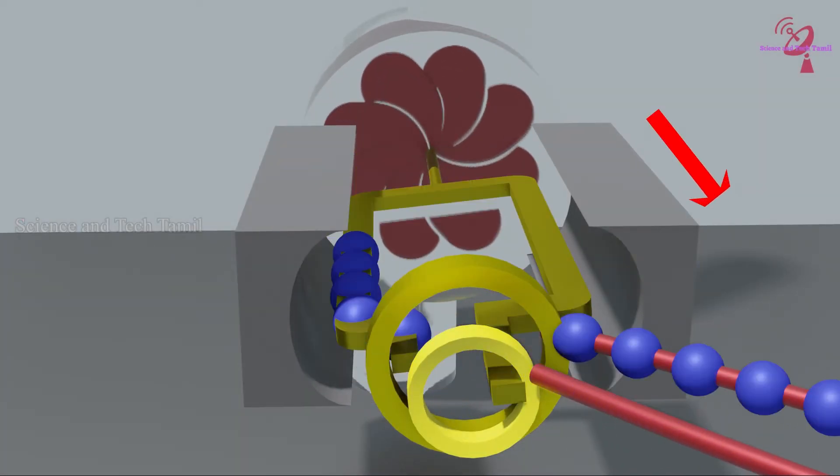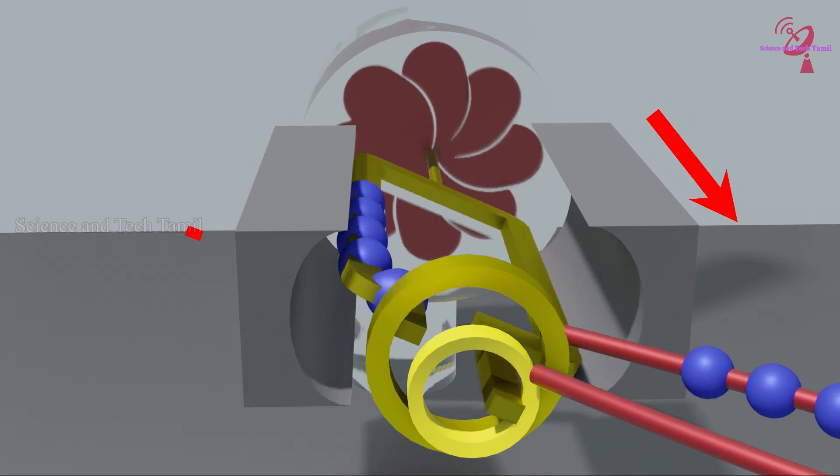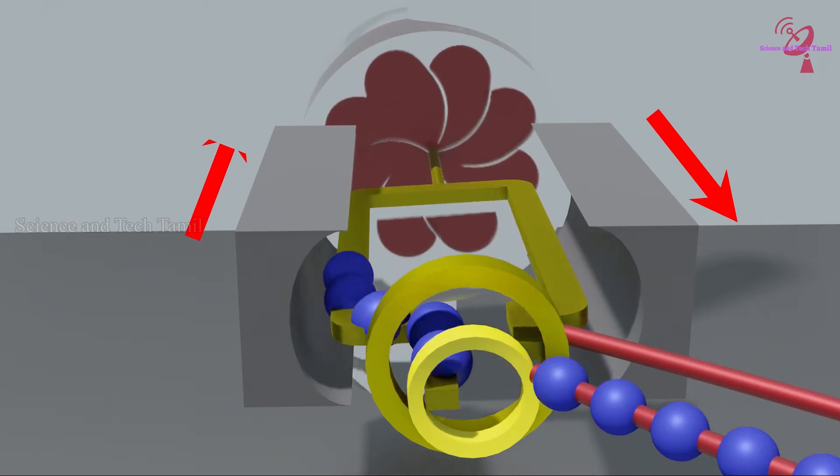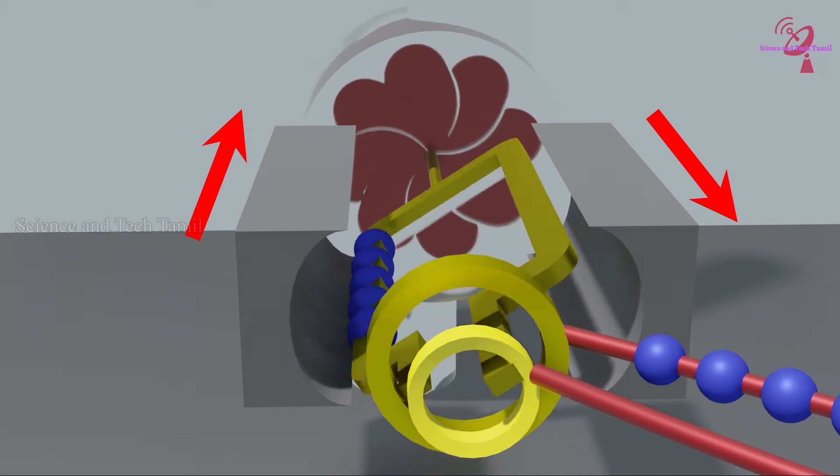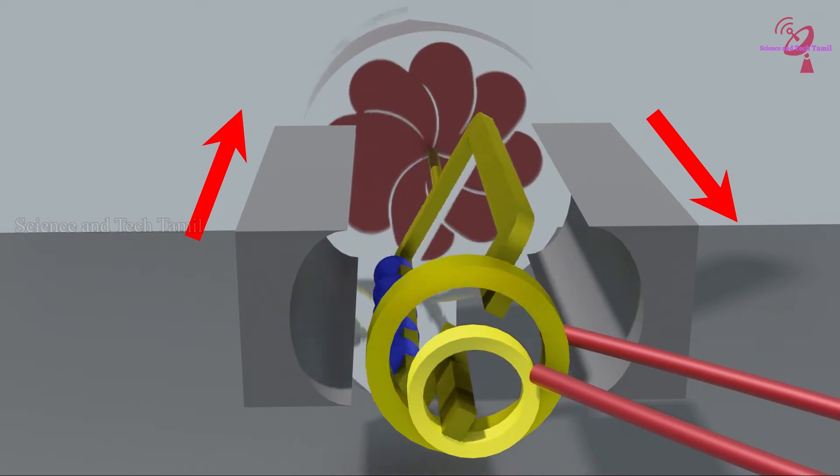The electrons that flow in south and north magnets flow opposite to each other. Until the coil completes a half revolution, the electrons flow in one direction.